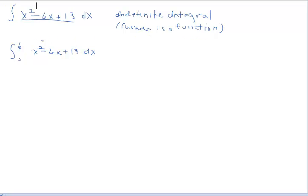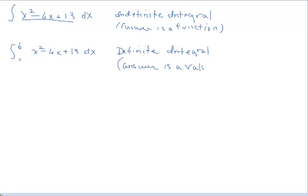What does it mean when we have the same situation but now we have a lower limit and an upper limit? Well, this is no longer an indefinite integral — it's a definite integral. So this is a definite integral. What does our answer look like? Our answer is actually a value. When we put limits on our integral symbol, we're looking for a numeric value. I just wanted you to know the difference between an indefinite integral and a definite integral — they direct us to do two different things.